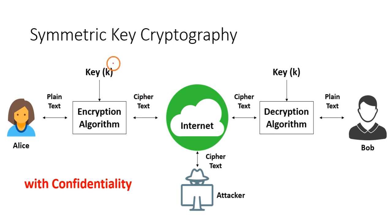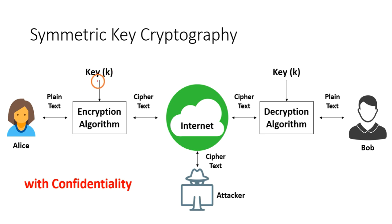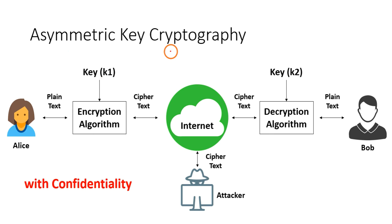In cryptographic algorithms, the algorithm also requires a second input called a key. A key is a secret string or secret data known only to Alice and Bob — the attacker does not know what the key is. If the same key is used by both Alice and Bob, we call that symmetric key cryptography. If the keys are different on the sending and receiving sides (k1 and k2), it is called asymmetric key cryptography.